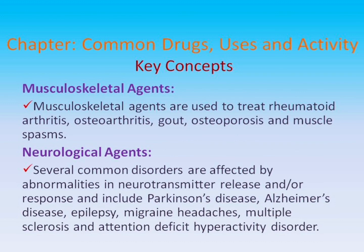Musculoskeletal agents are used to treat rheumatoid arthritis, osteoarthritis, gout, osteoporosis, and muscle spasms. Neurological agents: Several common disorders are affected by abnormalities in neurotransmitter release and/or response, and include Parkinson's disease, Alzheimer's disease, epilepsy, migraine headaches, multiple sclerosis, and attention deficit hyperactivity disorder.